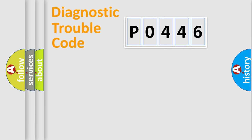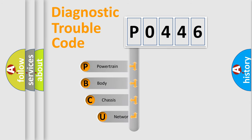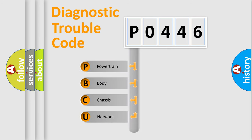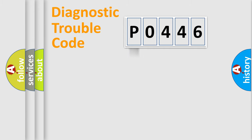First, let's look at the history of diagnostic fault code composition according to the OBD2 protocol, which is unified for all automakers since 2000. We divide the electrical system of an automobile into four basic units: powertrain, body, chassis, and network.